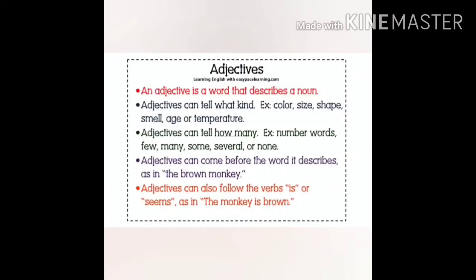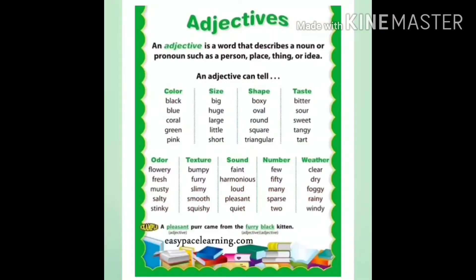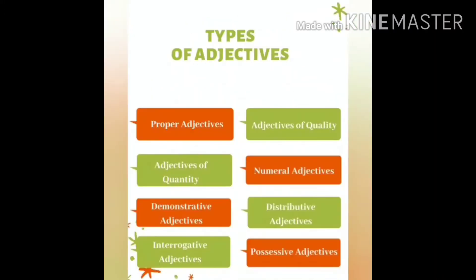In the sentence, a word that gives information about a noun is known as an adjective. For example, 'they live in a house' — here 'they' is the subject, 'live' is the verb, 'in' is the preposition, and 'house' is the noun. But if I use 'beautiful' in the sentence, it becomes 'they live in a beautiful house.' Here 'beautiful' tells you more about the noun 'house' — what type of house it is.